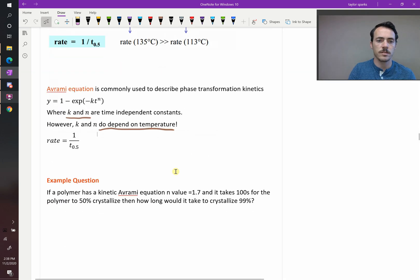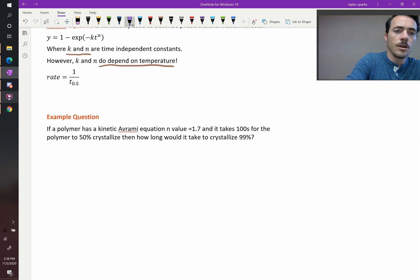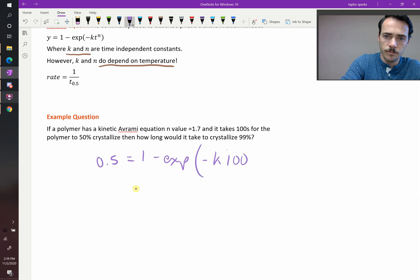So let's do an example of this. If a polymer has a kinetic Avrami equation N value of 1.7, and it takes 100 seconds for the polymer to be 50% crystalline, then how long would it take for it to crystallize to 99%? Well, we could solve this. We would say that Y is our fraction of crystallinity. So let's start with the values that we know. We know that it reaches 0.5 or 50% crystalline with 1 minus the exponential of negative K, which we don't know, multiplied by 100 seconds, raised to the N value, which is 1.7. So we could solve for K.